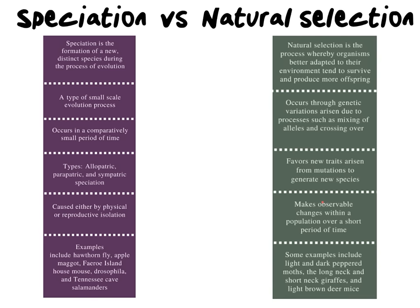The last thing to clarify before going into the steps of speciation is the difference between speciation and natural selection. Natural selection is the process whereby organisms become better adapted to their environment so they can survive and produce more offspring — essentially survival of the fittest. It occurs through genetic variations, and those variations can be a mixture of successful traits that are passed on from generation to generation to ensure survival. These new traits that arise often come from mutations and they can make a new species, but natural selection doesn't always result in a new species — it can make one, but it's not always the ultimate goal.